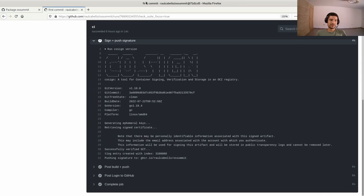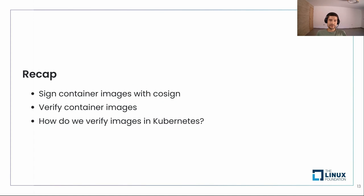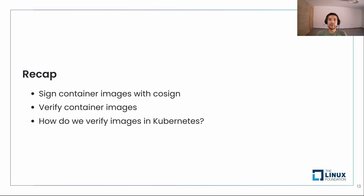Let's recap. We have learned how to sign container images with Cosign. You can use the keypair workflow, but you need to handle the private key, keep the password secure, and distribute the public key for verification. Or you can use keyless mode as we have seen — which is still experimental, but hopefully will not be experimental soon. By the way, Kubernetes is using keyless, which is really cool because you don't need to handle any keys or distribute public keys for verification.